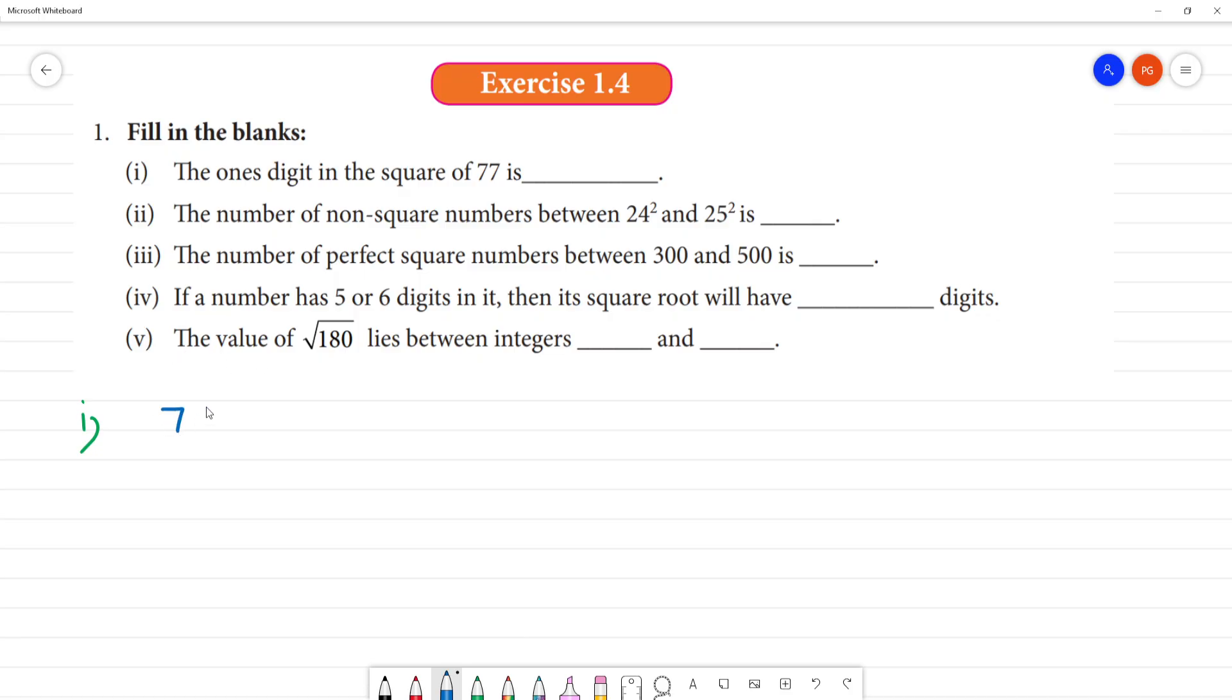77 square. What is 77 multiplied by 77? Now, the question is ones digit. We don't need to multiply fully. So, what is 77 multiplied by 77? 7 times 7 is 49, reminder 4. But the ones digit is 9.